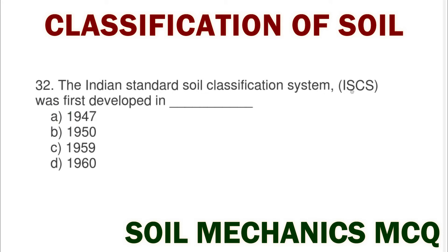Next question: the Indian standard classification system was first developed in option A 1947, option B 1950, option C 1959, option D 1960. The correct answer is option C 1959.